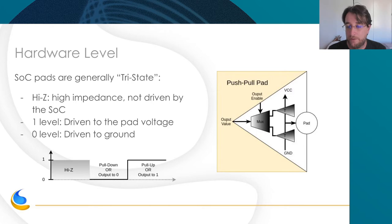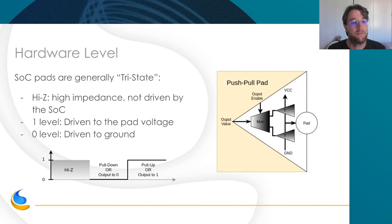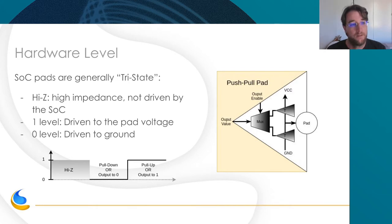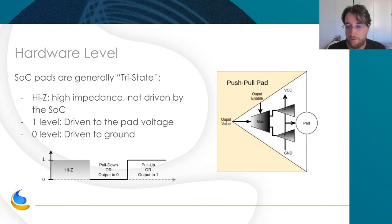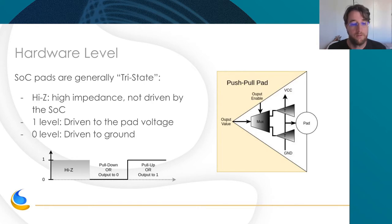In the analog part, we have what's called a push-pull pad or CMOS pad. It's a three-state pad: one level is driven to the pad voltage (VCC or VCCIO), zero is driven to ground, and there is a third state called high impedance when it's not driven by anyone — no component on the PCB is actually driving the line. This is why high impedance has a special drawing to indicate it's between zero and one but nobody knows what the actual value is.